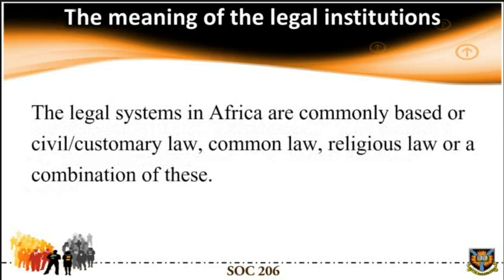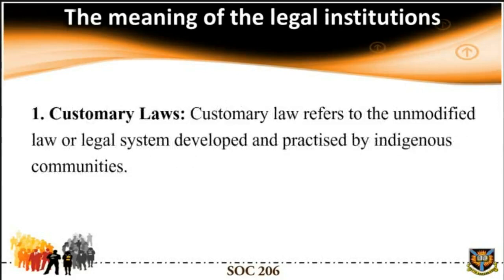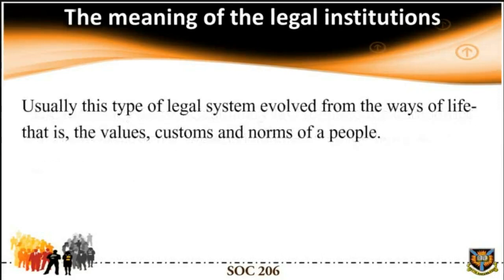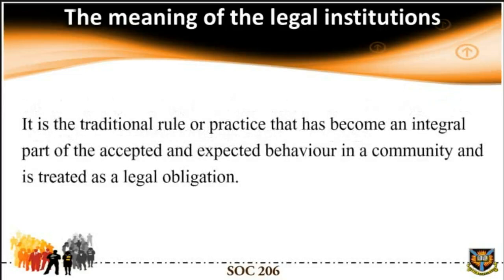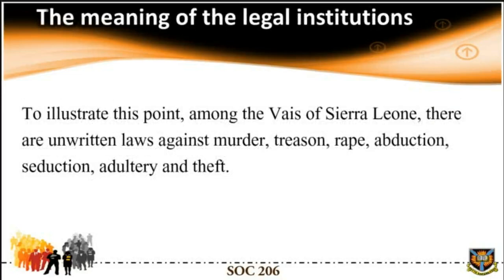The legal system in Africa is commonly based on civil or customary law, common law, religious law, or a combination of these. Indigenous African legal institutions are basically founded on customary and religious law. Customary laws refer to the uncodified law or legal system developed and practiced by indigenous communities. This type of legal system evolved from the ways of life — that is, the values, customs, and norms of the people.